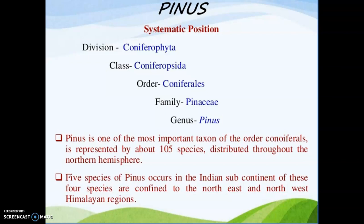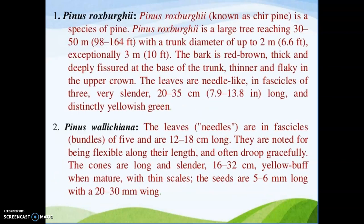Mostly five species occur in the Indian subcontinent, from the northeast to the northwest, mostly present in the Himalayan region. The first species is Pinus roxburghii, commonly known as Chir Pine. It is a large tree, height up to 30 to 50 meters, and diameter of stem or trunk is two meters, sometimes also three meters. The color of the bark is red-brown, thick, and deeply fissured at the base of the trunk, thinner and flaky upper. The leaves of this plant are needle-like.